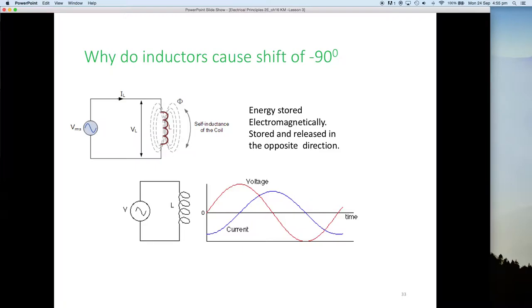So as the back EMF of the magnetic field begins to collapse, that feeds back into the circuit. But it's all too late. It's 90 degrees too late. And by the time it's got back into the circuit, the voltage and the magnetic field is building up in the opposite direction again.